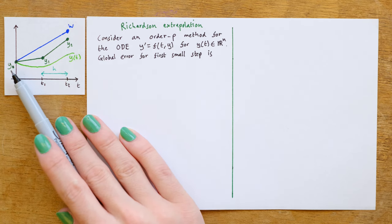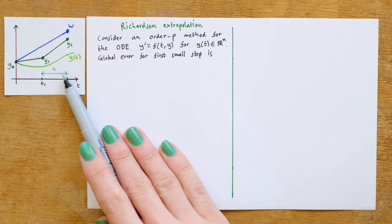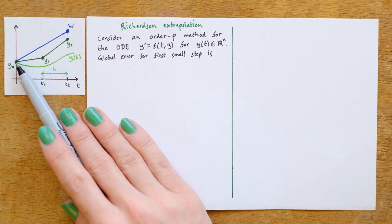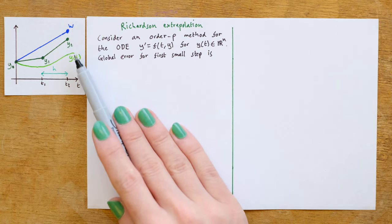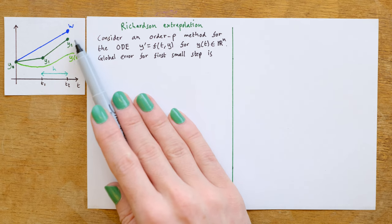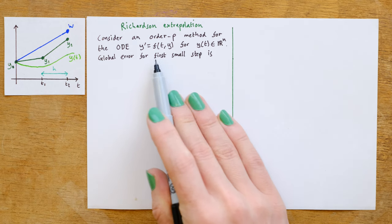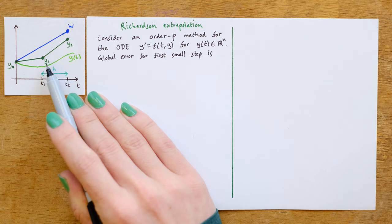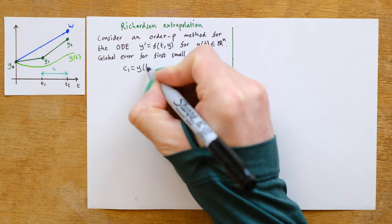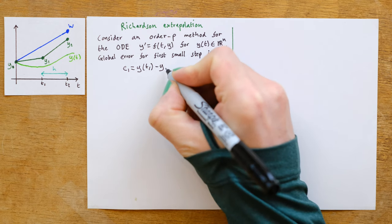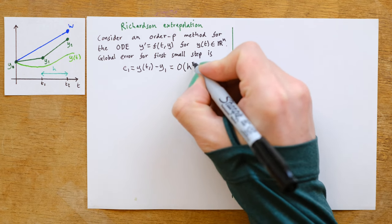Starting from y zero, we could numerically integrate to y1 and y2 using two small steps of size h. Alternatively, we could numerically integrate using one big step of size 2h, and that would give us a solution w. Richardson extrapolation relies on a comparison between y2 and w. So let's begin by looking at the global error for the first small step to y1. We write e1 equal to y of t1 minus y1, and for an order p method, that will be equal to O of h to the p plus 1.